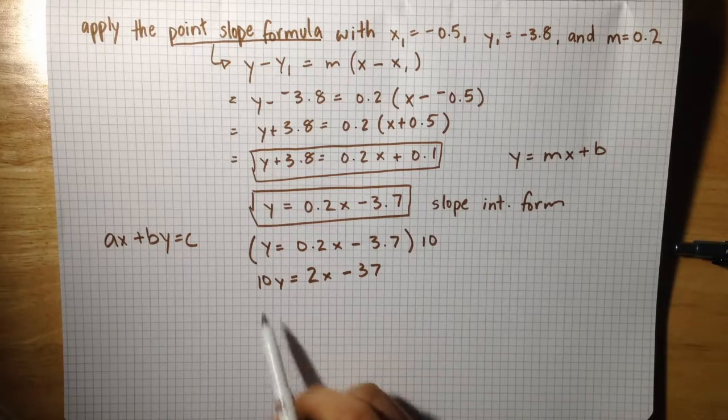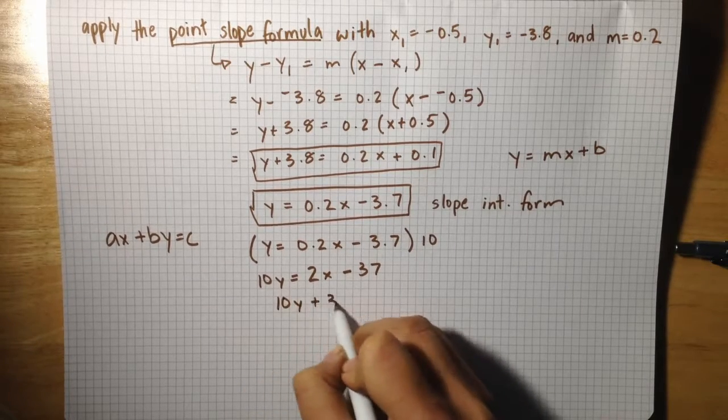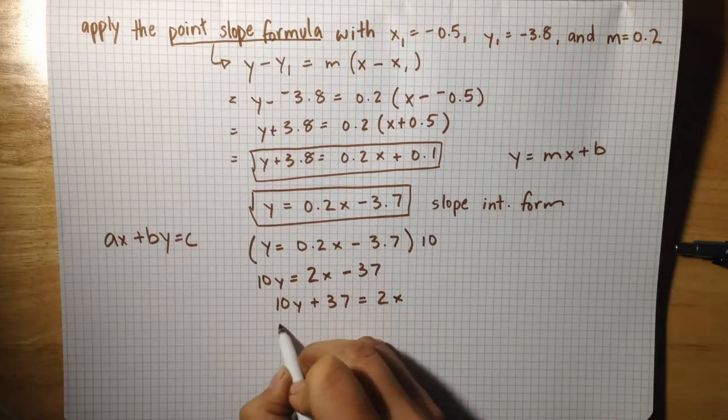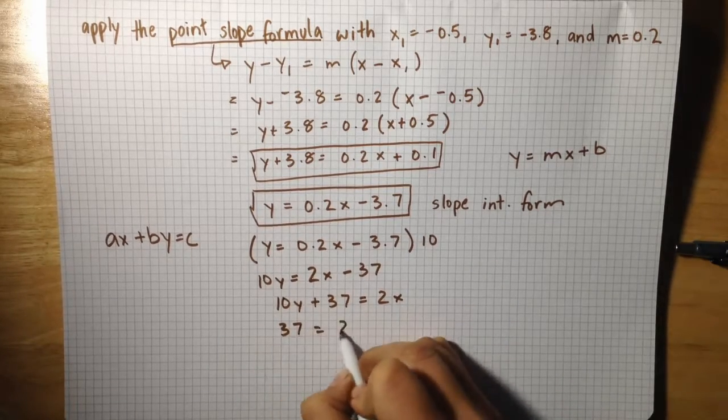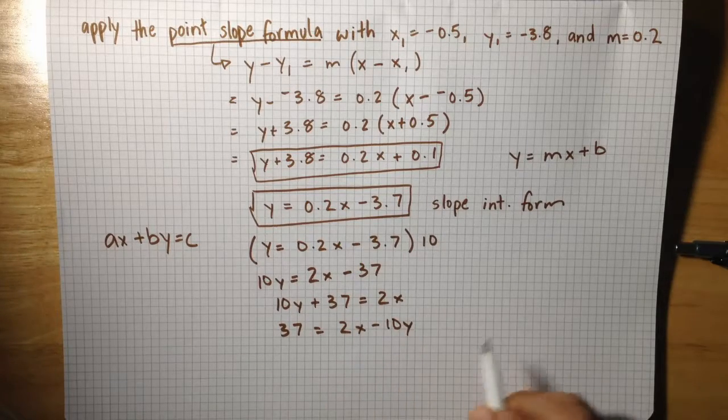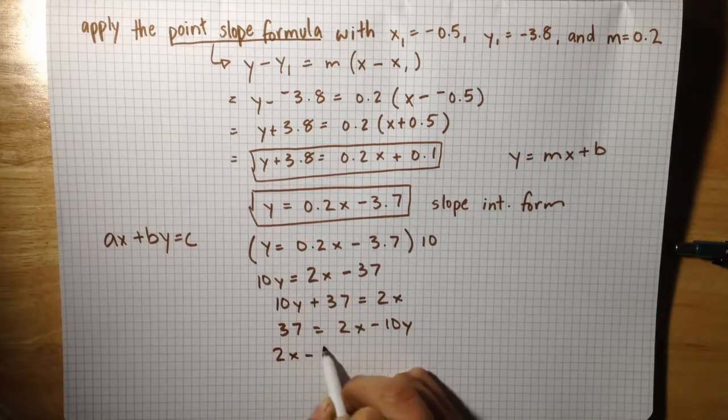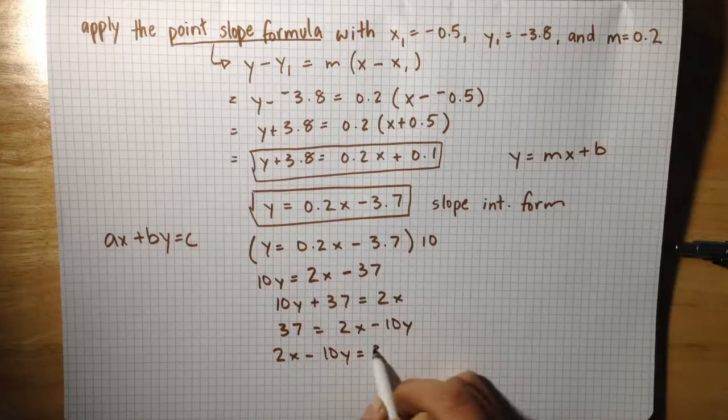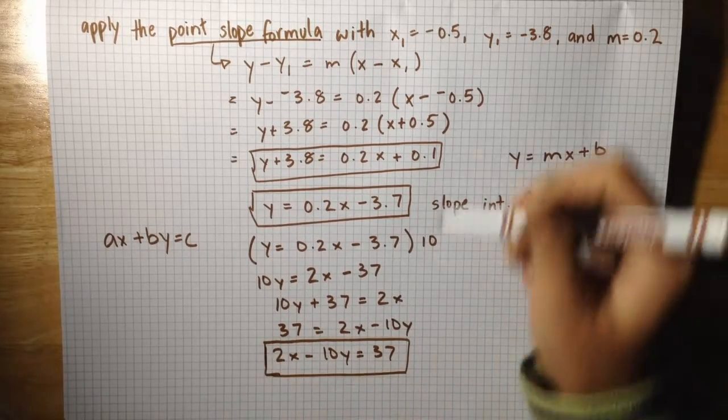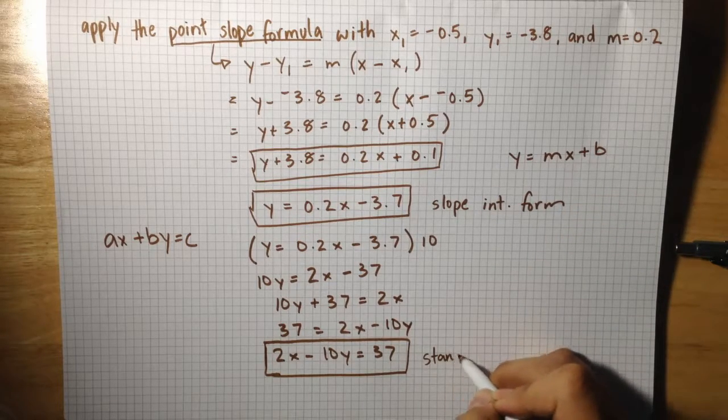Then I'm going to add this to the other side, so I get 10y plus 37 equals 2x. I'm going to subtract this to this side, so I get 37 equals 2x minus 10y. I'm just going to rearrange it so 2x minus 10y equals 37 is how you would write these equations in standard form without decimals.